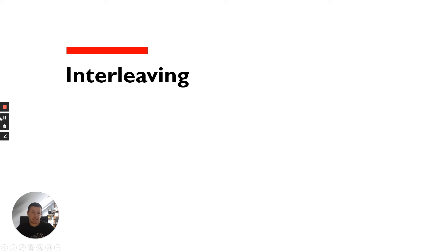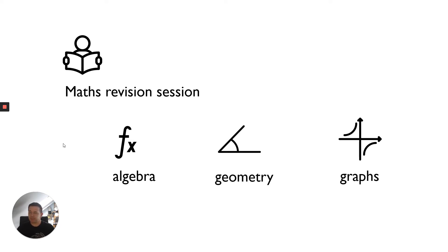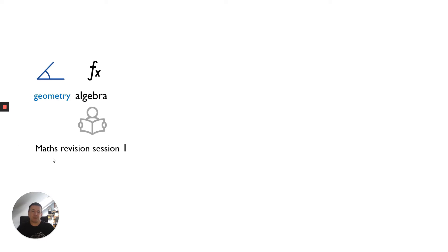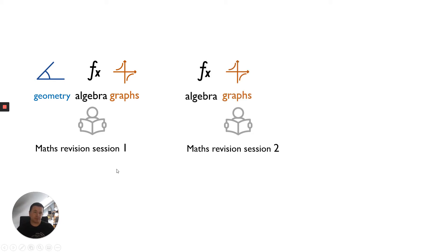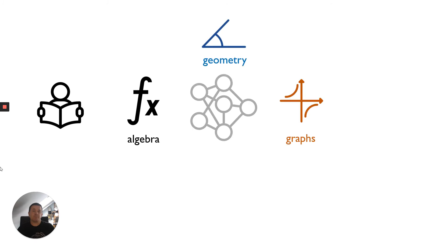The second method is interleaving. When you do a revision session, it's important to look at different topics and go over them in different orders — that strengthens your understanding. Your first maths revision session might be geometry, algebra and graphs. Your second session you'd start with algebra, then graphs and geometry. Your third time: graphs, geometry, algebra. Changing that order helps to firm up your understanding of a topic and makes better links between different topics.